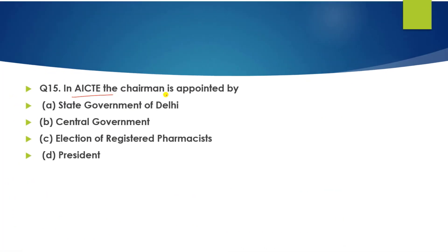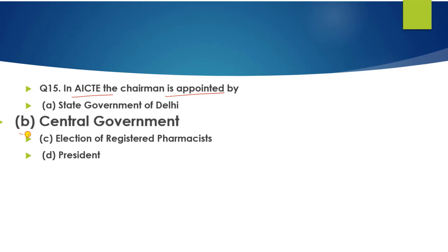Question number 15: In AICTE, the chairman is appointed by whom? The AICTE chairman is appointed by the central government.